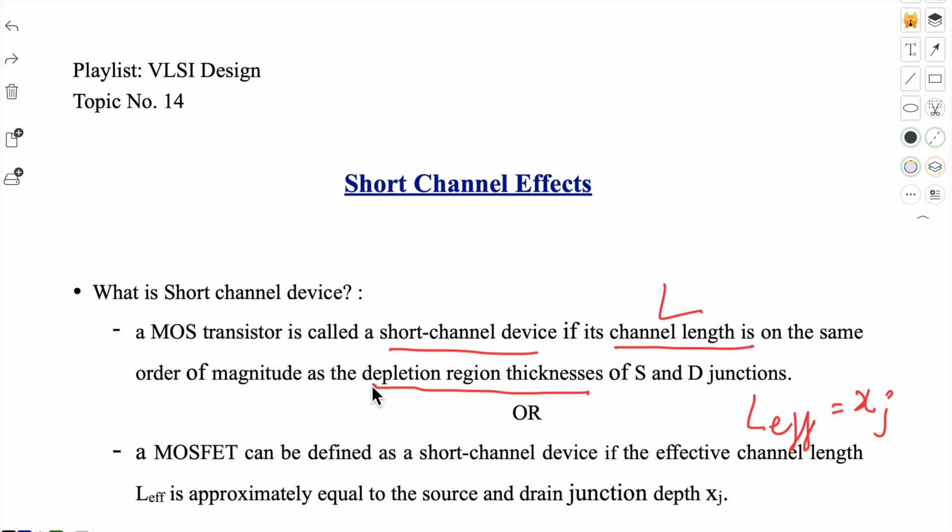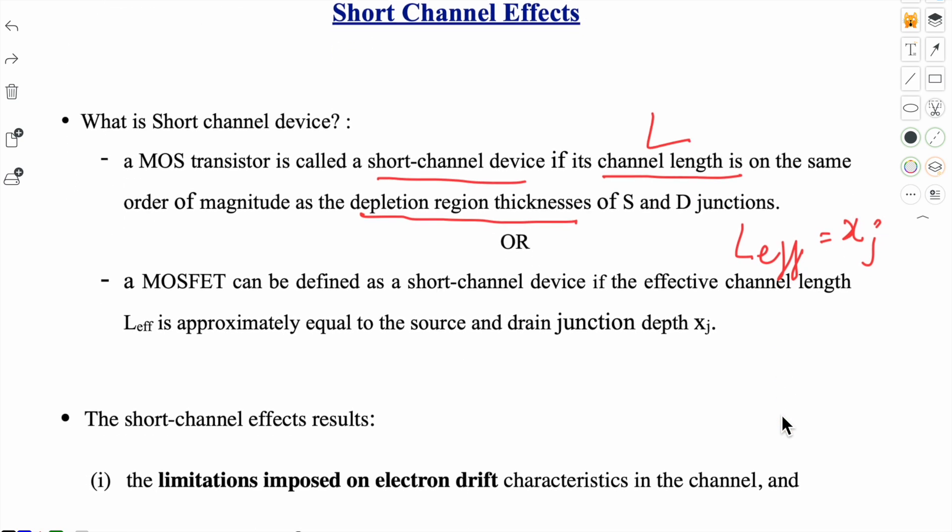So channel length when it equals the depletion region thickness of source and drain junctions, or when the effective channel length equals the junction depth, then we say that the MOS transistor has become a short channel device.